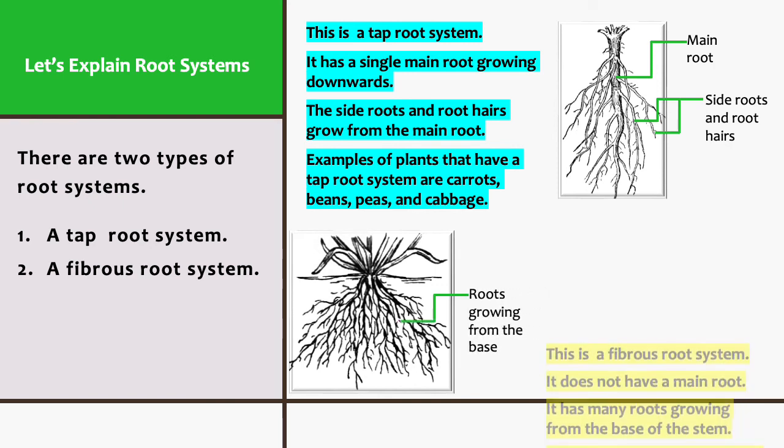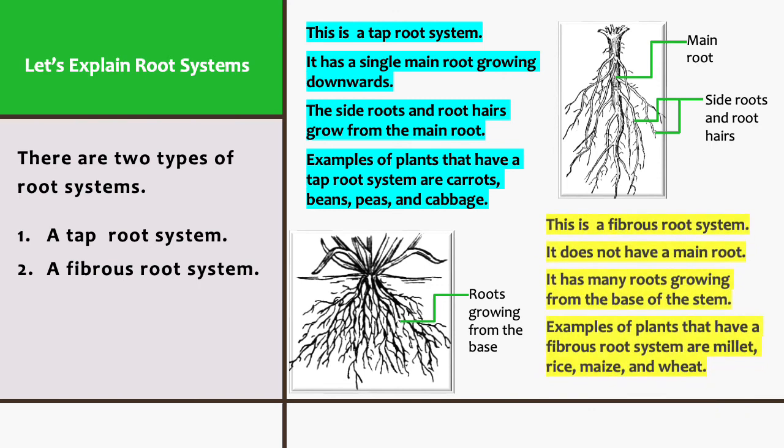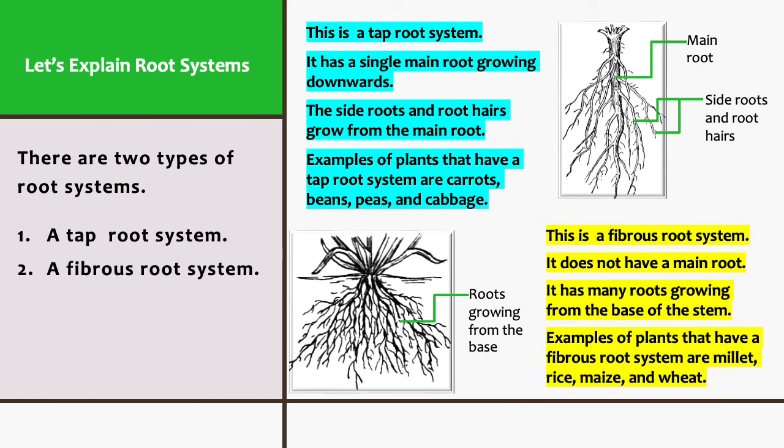This is a fibrous root system. It does not have a main root. It has many roots growing from the base of the stem. Examples of plants that have a fibrous root system are millet, rice, maize, and wheat.